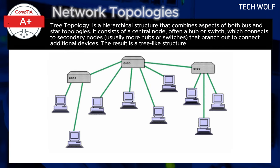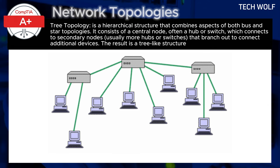Tree topology is a hierarchical structure that combines aspects of both bus and star topologies. It consists of a central node, often a hub or switch, which connects to secondary nodes, usually more hubs or switches, that branch out to connect additional devices. The result is like a tree structure, where the root represents the central point and the branches are the connections to various devices.